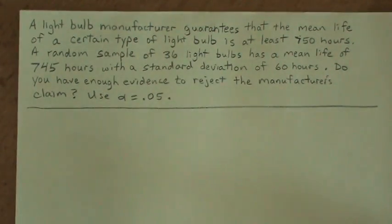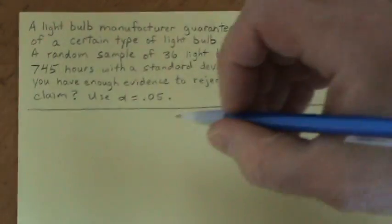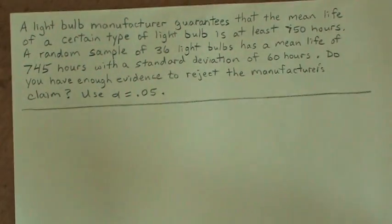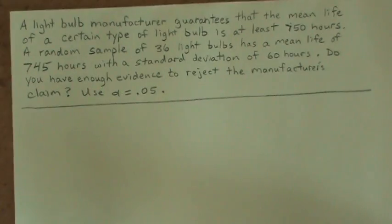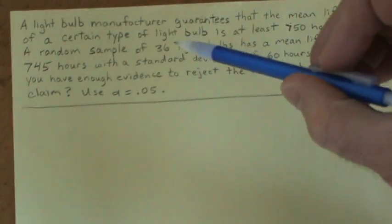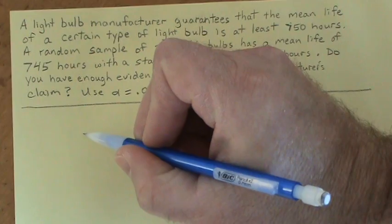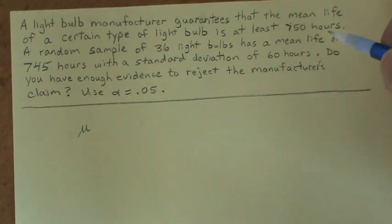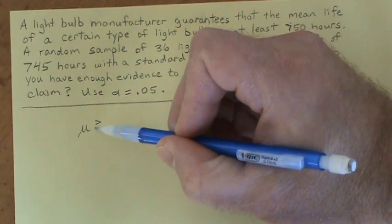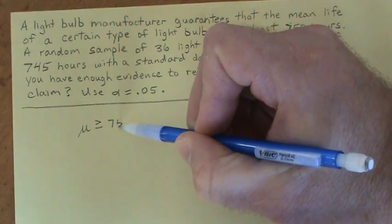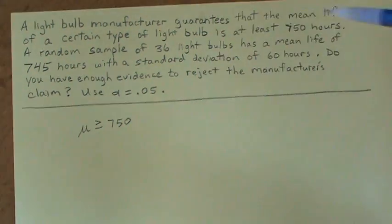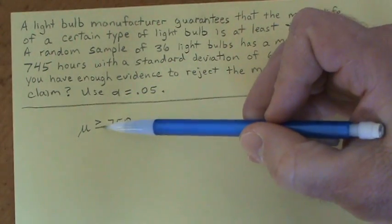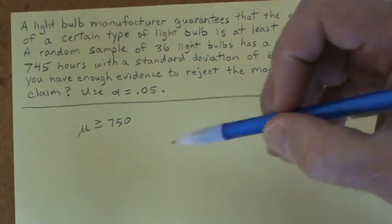And to do that, we're going to use a hypothesis test. To start out, we want to always write what the claim is mathematically. Now mathematically, they're claiming that the mean—and so we call that μ, the mean life—is at least 750. That means it could be equal to 750 or it might even be greater than 750, so we would write is greater than or equal to 750.